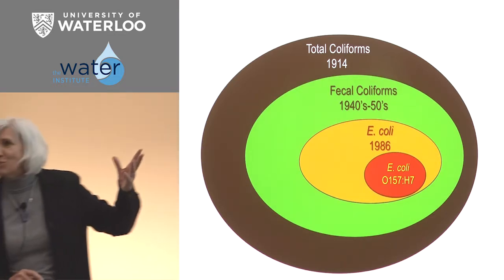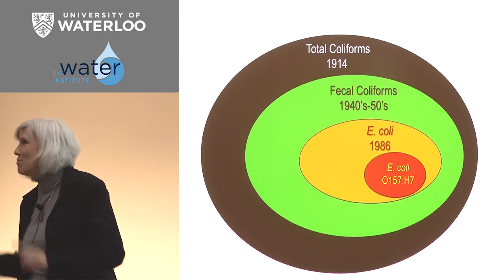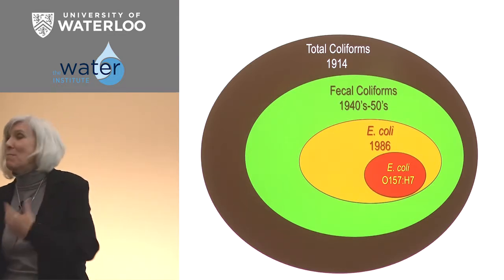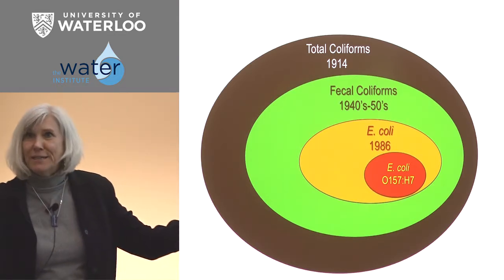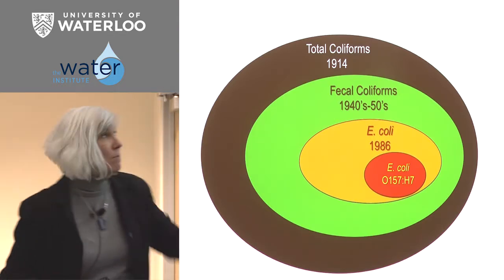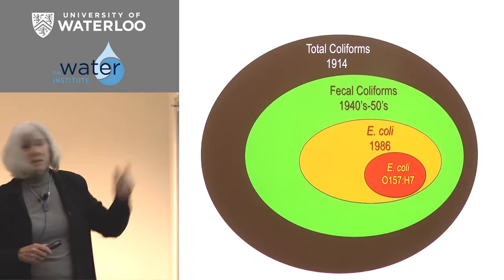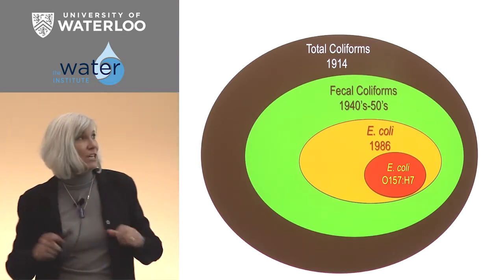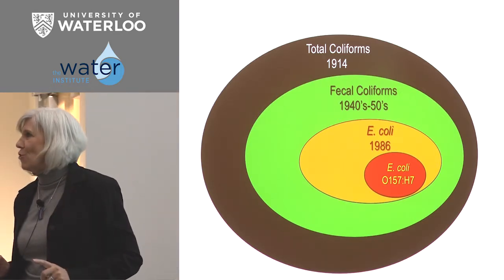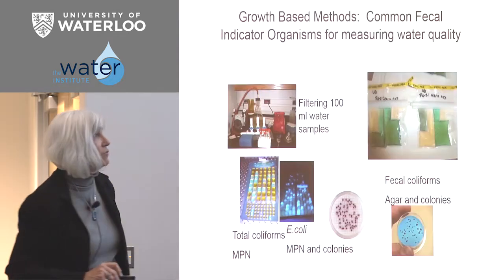E. coli is a member of the coliform group. We didn't have the method early on, so we moved to fecal coliforms by raising the temperature to get fecal coliforms in the 40s and 50s. We now have the ability to look just for E. coli, and now we can also look for the pathogenic types of E. coli. The technology has moved us forward.